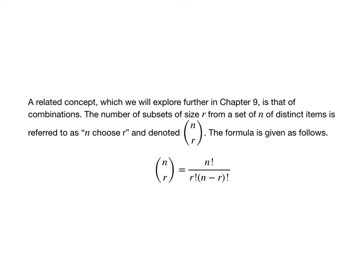The formula for n choose r is given as follows: n factorial over r factorial times n minus r factorial.